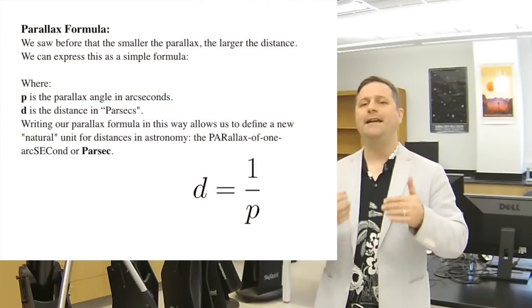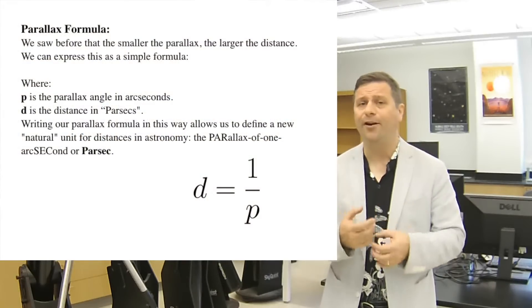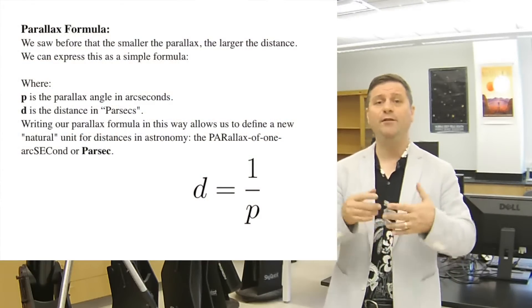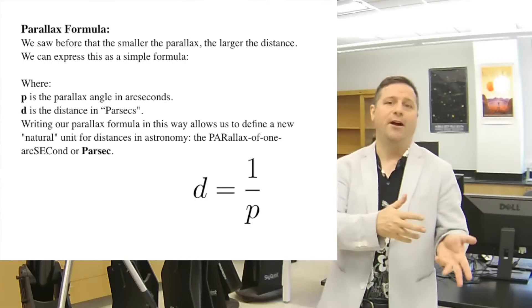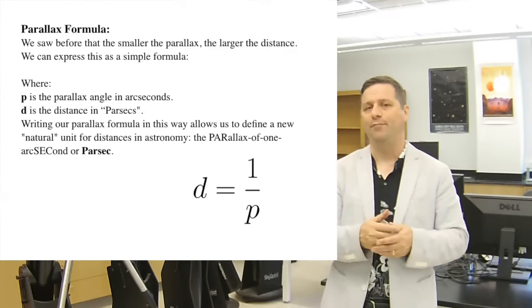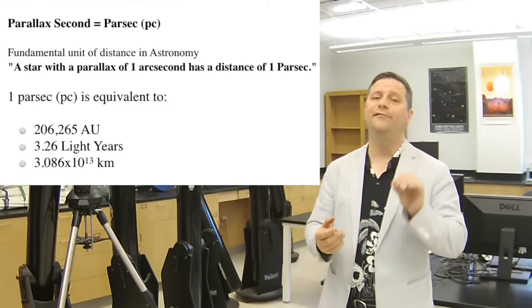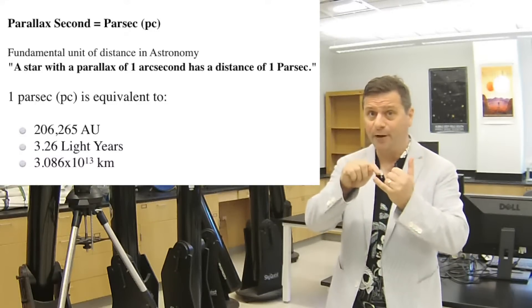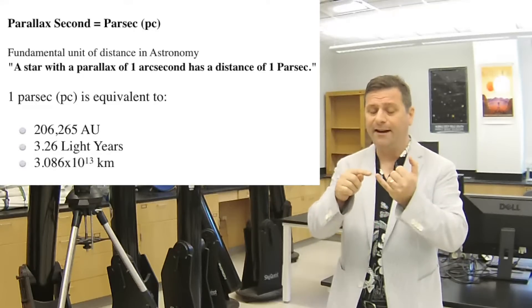Where did that distance come from? We derive a concept called the parsec. If a star has a parallax of one arc second, then we define its distance to be one parsec. That's what parsec stands for: parallax of one arc second. A parsec is the same as 206,265 astronomical units.